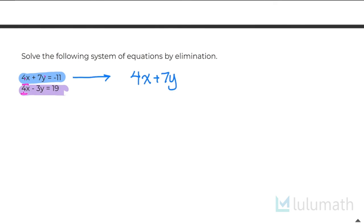So what I will do is I'm going to keep the top one exactly the same. 4x plus 7y equals negative 11. But for the bottom one here, I'm going to multiply the entire bottom equation by negative 1. By doing that, this 4x, this positive 4x times negative 1 becomes a negative 4x.